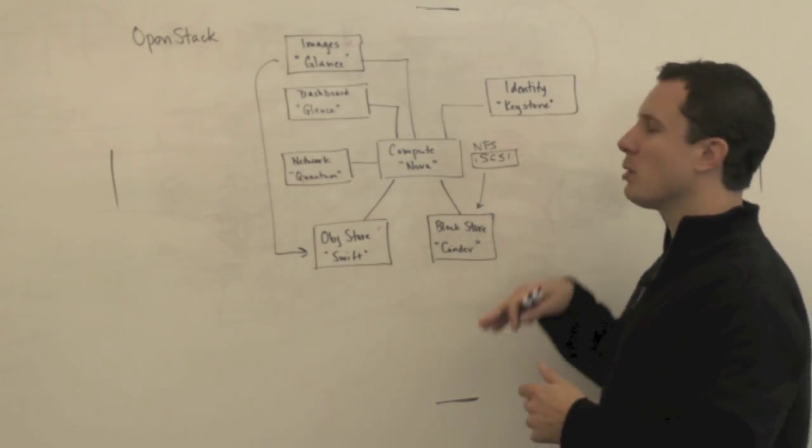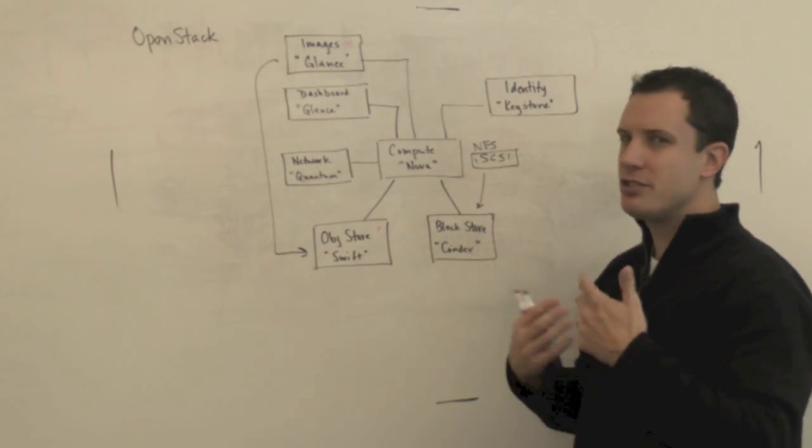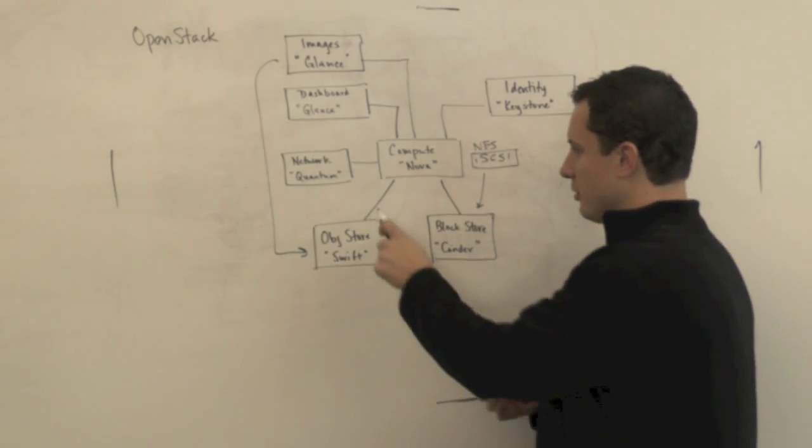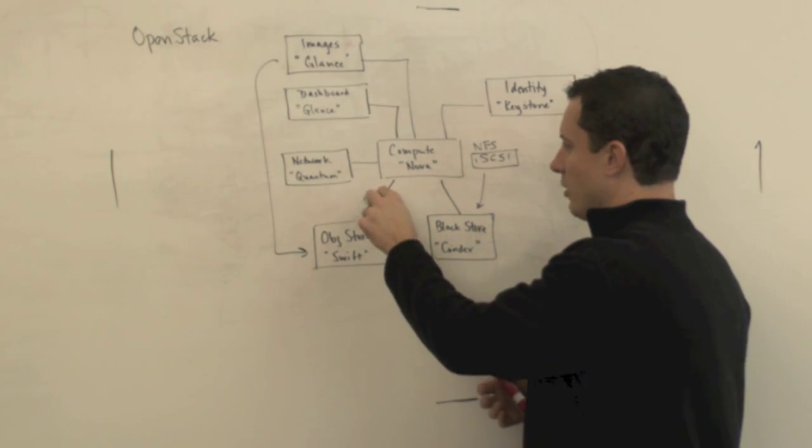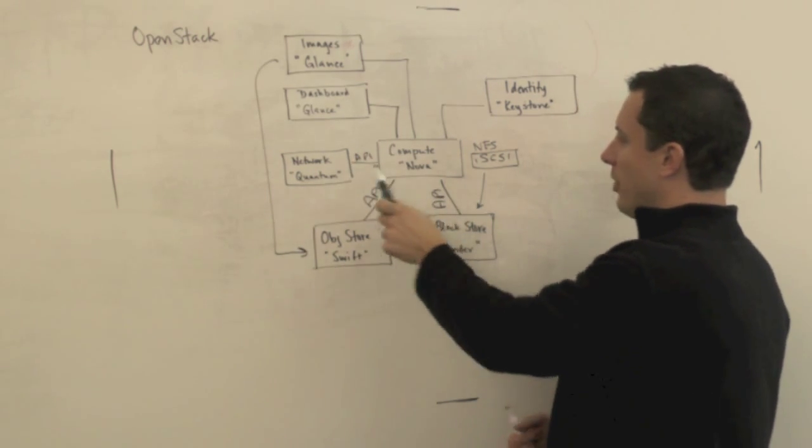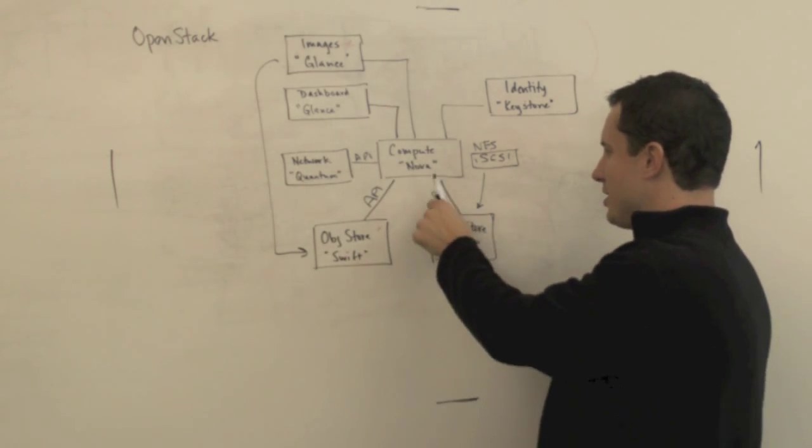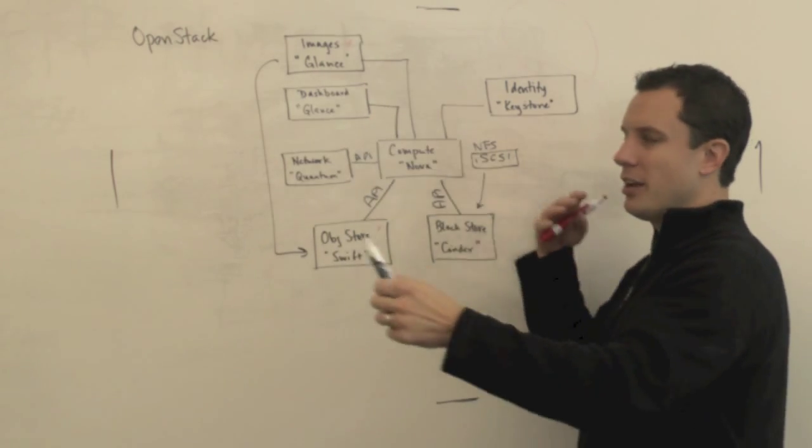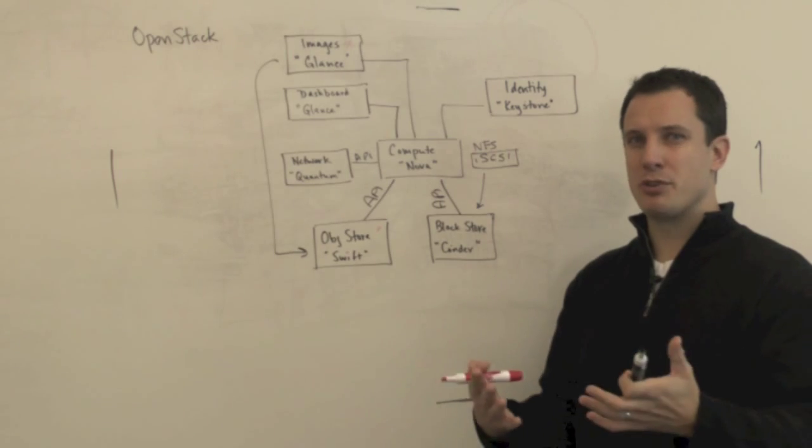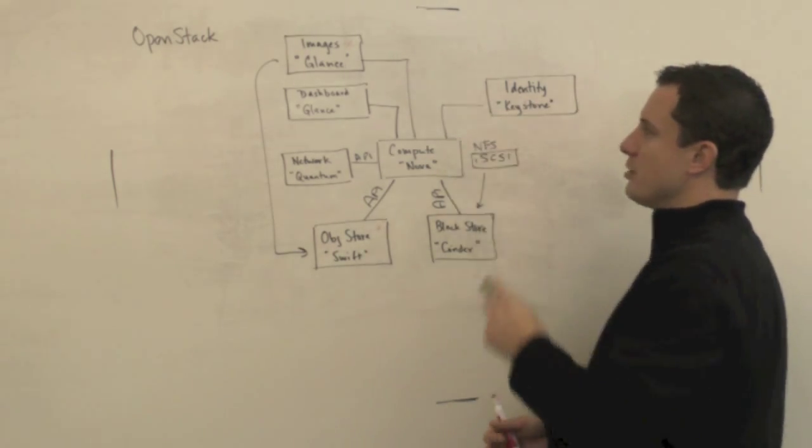And then finally, the identity project, which was sort of there but not completely there before, is called Keystone. And this is really the identity that lets any of these components, which again talk through APIs between each other, it keeps track of the identity of any of these. So the ability to authenticate between Quantum and Nova, the ability to authenticate between Cinder and Nova, to make sure that the services know what other services are available, are they authenticated, are they the proper service, are they being run the proper way, all of that is managed through the Keystone process, or the Keystone project.